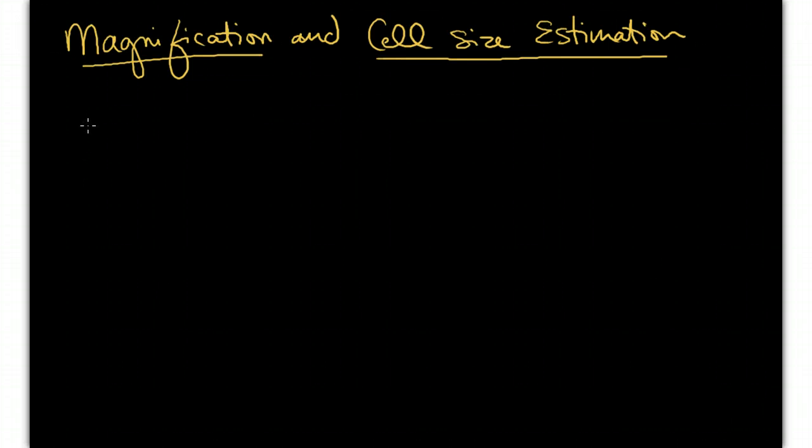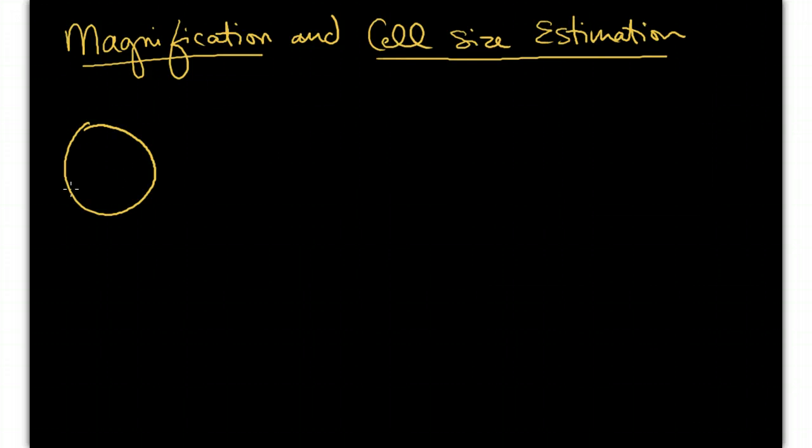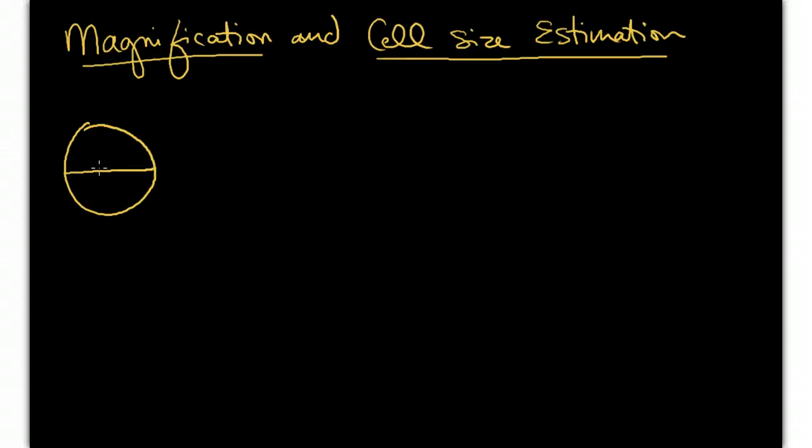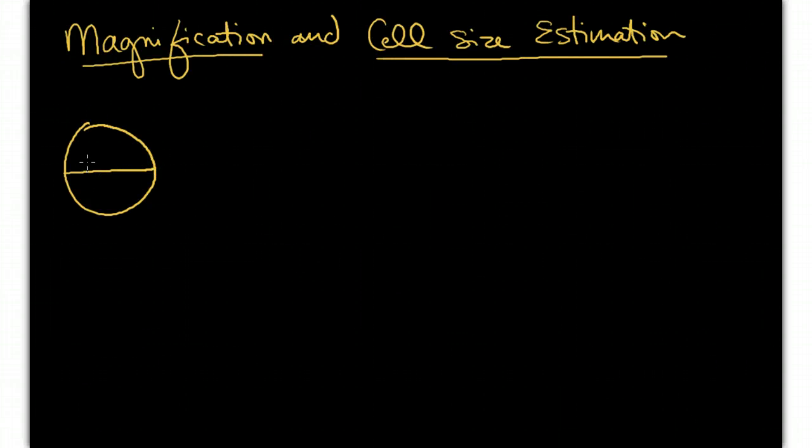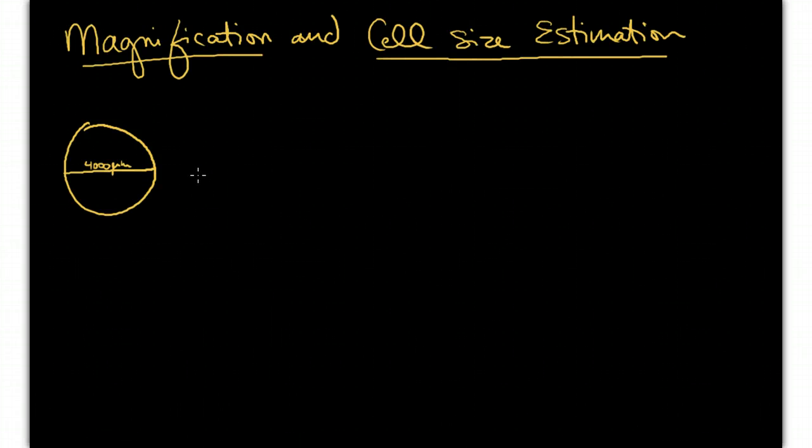So I'm going to draw a circle here. Let's say that this is my field of view for low power. So if my field of view is 4,000 micrometers, we can use that information to estimate how large or how long a cell is by knowing how many cells there are that fit across that field of view.